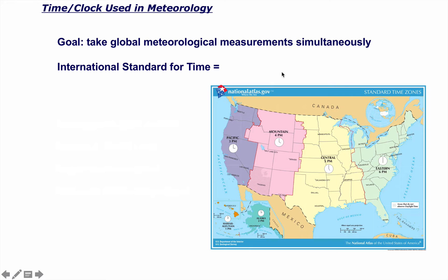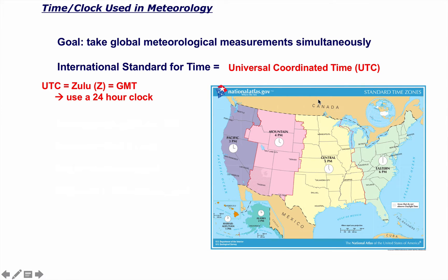We launch these at times 0Z and 12Z. When it comes to understanding how we collect meteorological data, it's all done using Universal Coordinated Time. The abbreviation is UTC — it was initially French, 'temps universel coordonné,' so the letters are reversed from the English order. UTC time is also called Zulu time and GMT time — they're all the same thing.